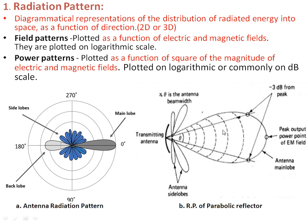On the right diagram I am explaining the radiation pattern of a parabolic reflector. If you observe, this is obviously the main lobe of the antenna.